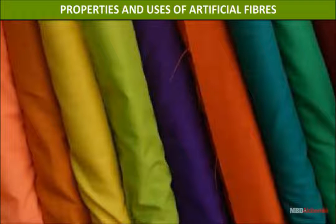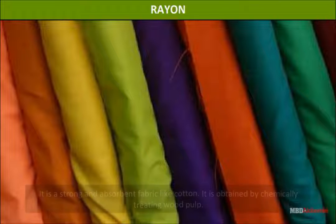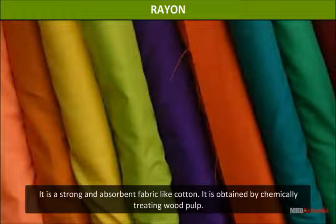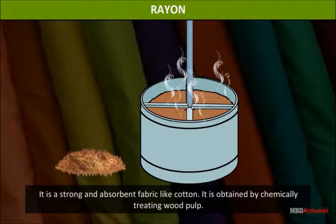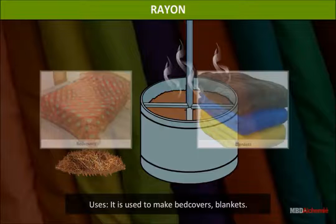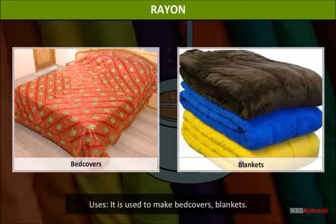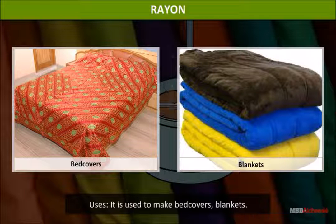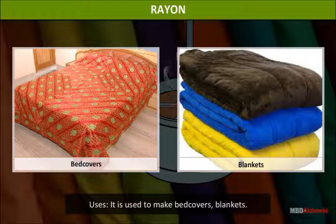Properties and uses of artificial fibers — Rayon: Rayon is a strong and absorbent fabric, similar to cotton. It is obtained by chemically treating wood pulp. Uses: it is used to make bed covers, blankets, tablecloths, curtains, and draperies.